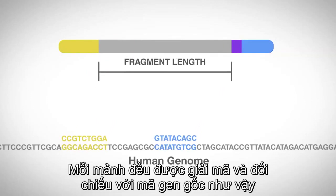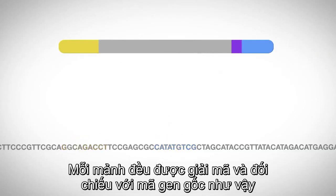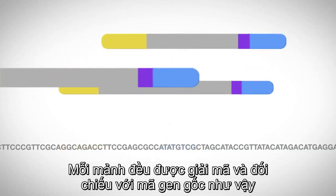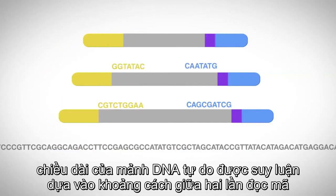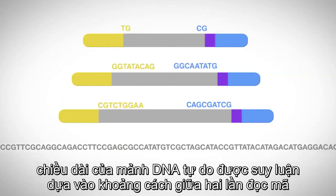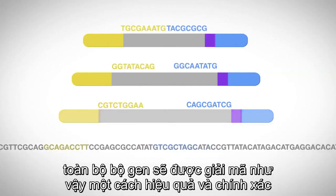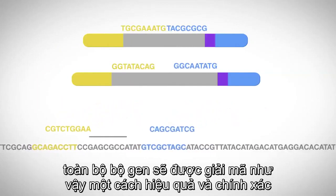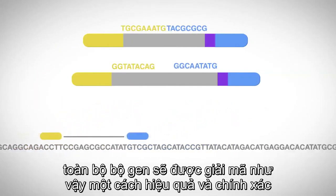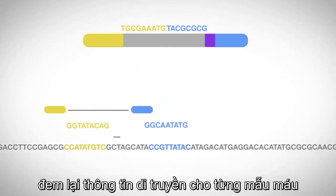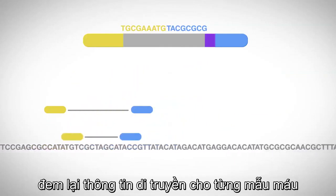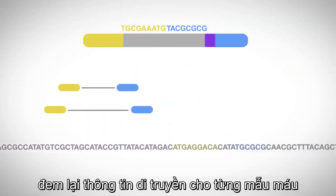As each pair of sequence reads is aligned to the genome, the length of the cell-free DNA fragment is inferred from the distance between the two reads. This whole genome approach efficiently and robustly captures information for each sample.